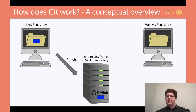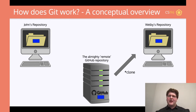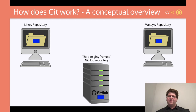John invites Welby to the repository on GitHub and tells him to clone it. Welby clones — which is basically downloading the repository for the first time. Now Welby has a copy of what John has, so everyone is synced up and sharing the same files. Cloning is a one-time thing — it's your initial download of the repository. After you do it once, you don't have to do it again. Now everyone has the same version across all different locations.